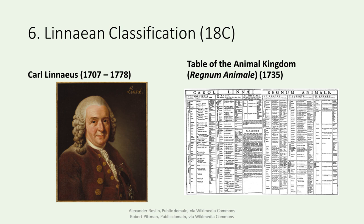Jumping ahead to the 18th century, we encounter Carl Linnaeus. He proposed a method of classifying living organisms systematically and, by clarifying the concept of a species as the basic unit of classification, he devised binomial nomenclature — a notation for the scientific name of a species. The Linnaean system brought order to the vast diversity of life. The image on the right is the table of the animal kingdom from the first edition of his book, System of Nature.